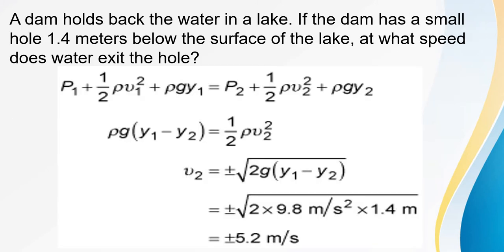Next problem: a dam holds back water in a lake. If the dam has a small hole 1.4 meters below the surface of the lake, at what speed does water exit the hole? We can use Bernoulli's principle step by step, where y₁ and y₂ are the heights measured from the ground level to the surface and to the hole respectively.